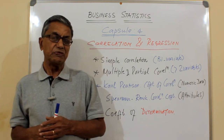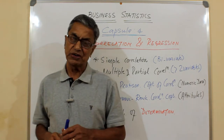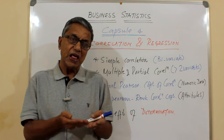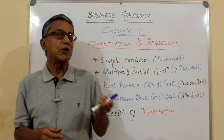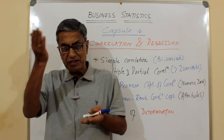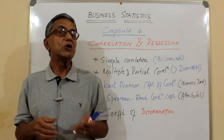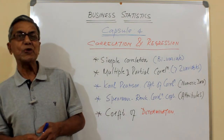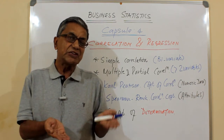We will understand all these things under correlation and regression. When one variable is increasing and it is impacting the other variable so that it also increases, it is called positive correlation. If one variable is increasing and another variable is decreasing — like the viscosity of a liquid — it is called negative correlation.